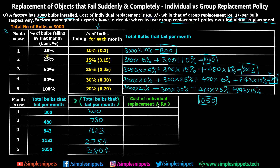Now we calculate the cost of individual replacement at ₹3 per bulb. Every month, the cumulative number of failed bulbs is multiplied by ₹3. After month 1: 300 × 3 = ₹900. After month 2: 780 × 3 = ₹2340. After month 3: 1623 × 3 = ₹4869. We similarly fill out months 4 and 5. This gives us the total cost of individual replacement of the bulbs up to each month.